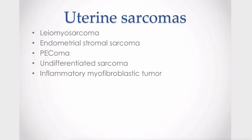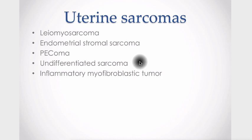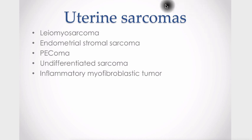Other endometrial sarcomas that can occur include the more common leiomyosarcoma. Endometrial stromal sarcoma is probably the second most common sarcoma in the uterus. PEComas can also occur in this location, though they're much less frequent. Undifferentiated sarcoma occurs as well, as does inflammatory myofibroblastic tumor. We might also add adenosarcoma, or Müllerian adenosarcoma, to this list.